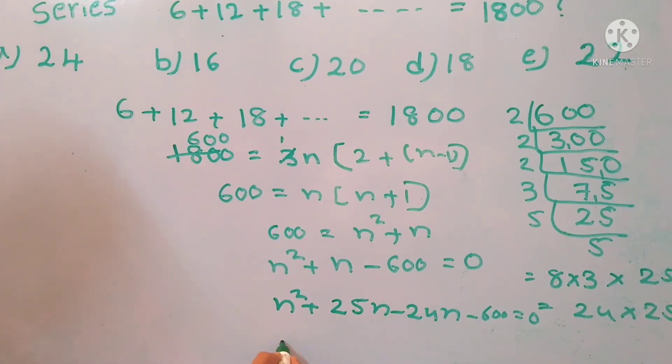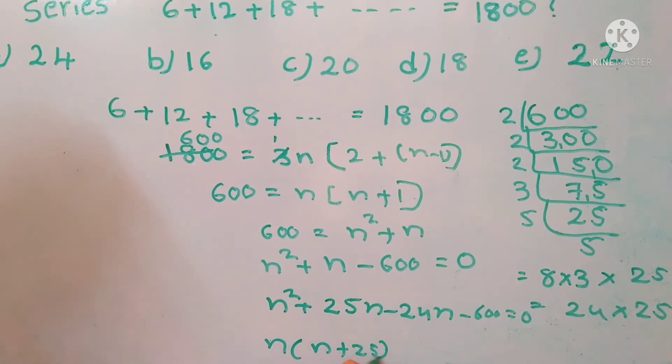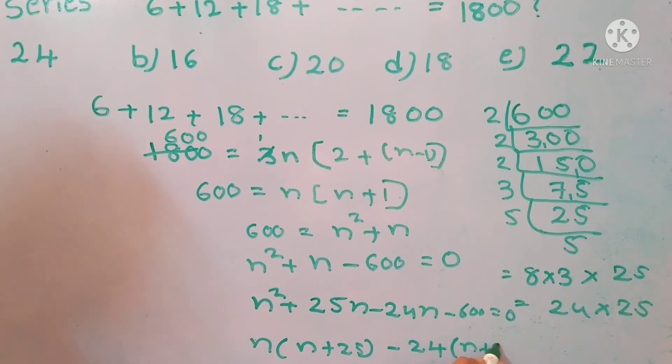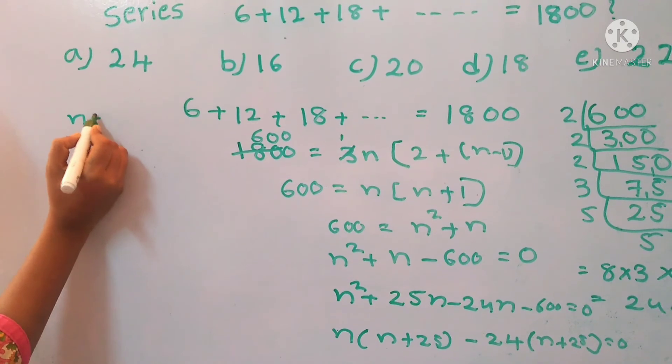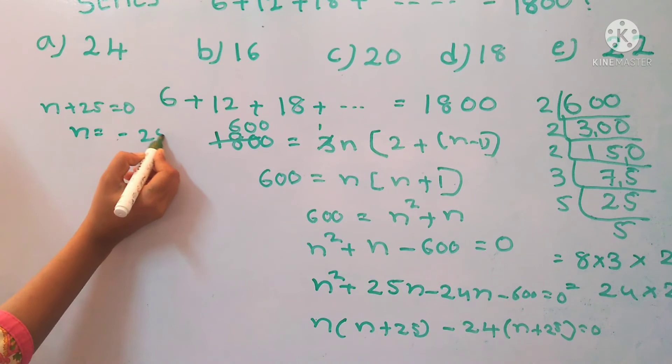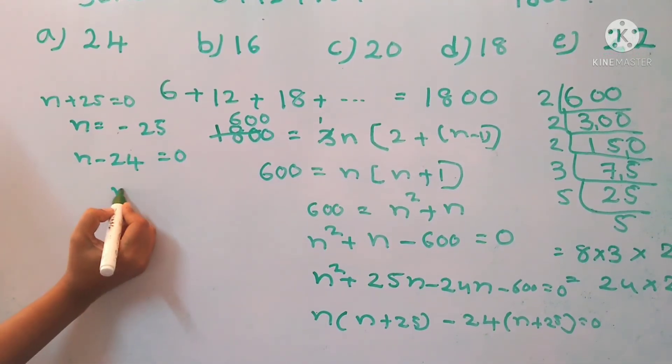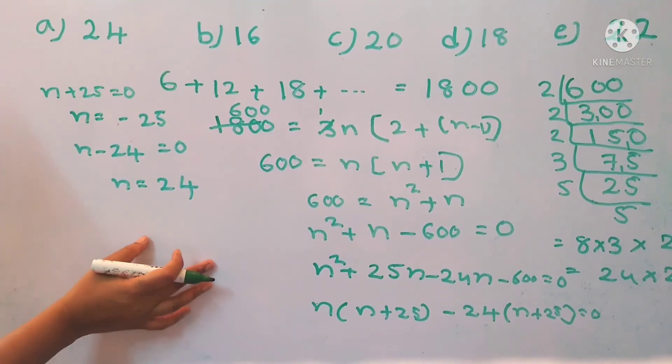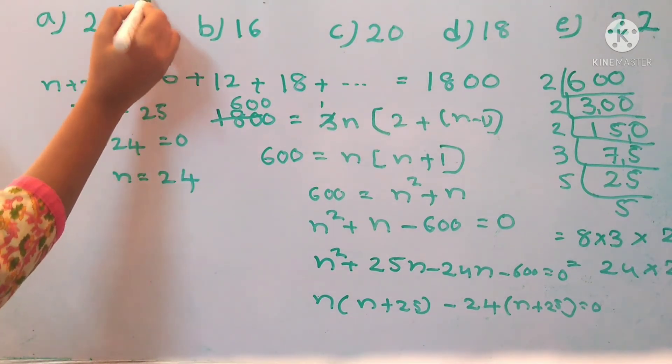Taking n as common: n into (n + 25) minus 24 into (n + 25) equals 0. So (n + 25) equals 0, or (n - 24) equals 0. Now we can write n equals -25 or n equals 24. Here we should take only positive values, so n equals 24. The correct option is a.